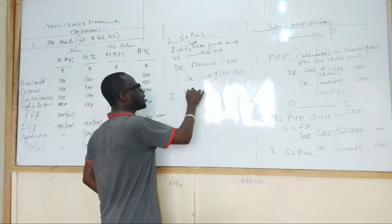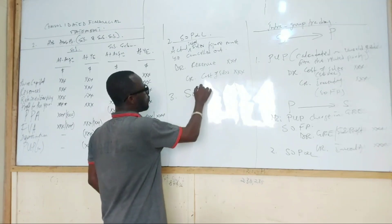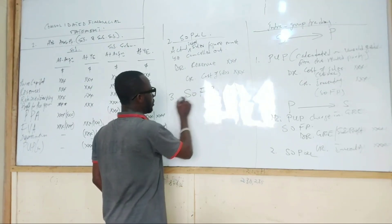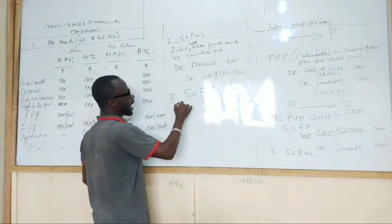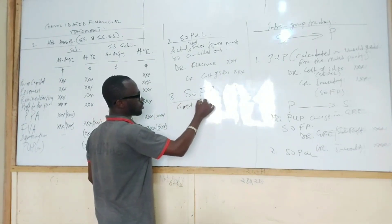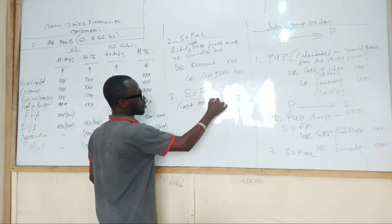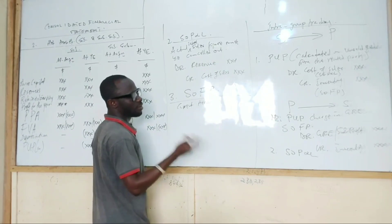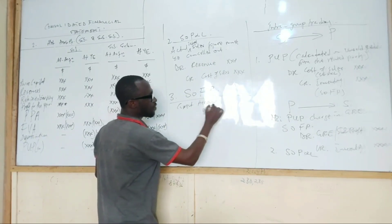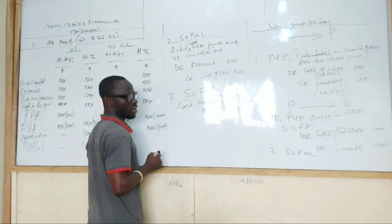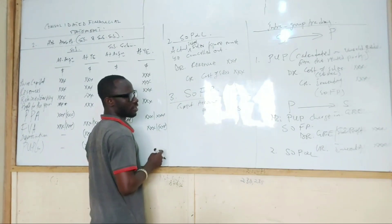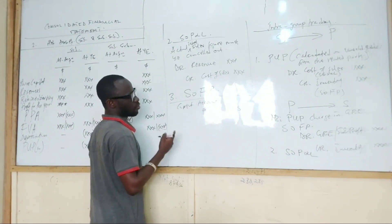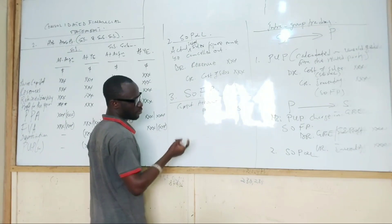If you are preparing the statement of financial position, you may have what we call the current account. What do we mean by the current account? It is simply the account between the parent and the subsidiary. I'm going to make an assumption and use that to explain the principle.